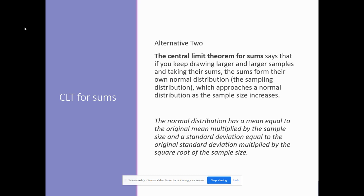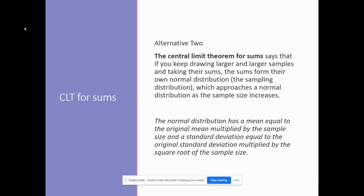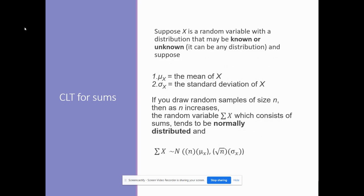So remember that when we did it before, for the mean, we had the mean and then we had a very specialized standard deviation called the sampling error. Well, we do something a little different for sums – and again, we're getting a different mean this time and a different standard deviation.